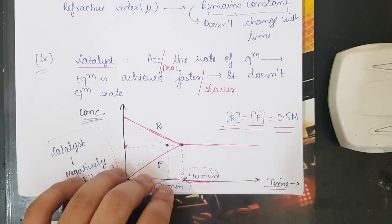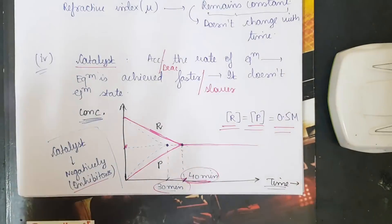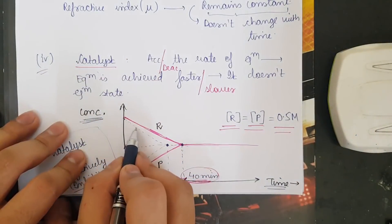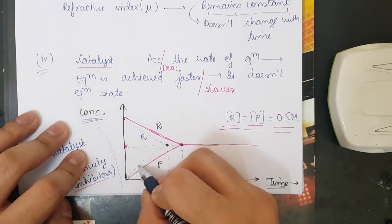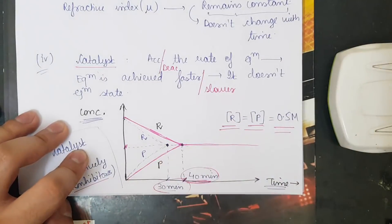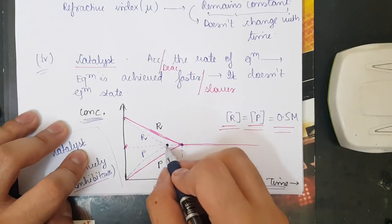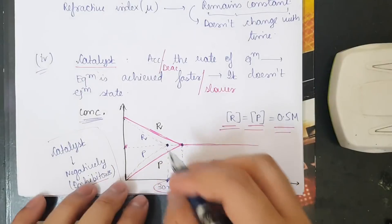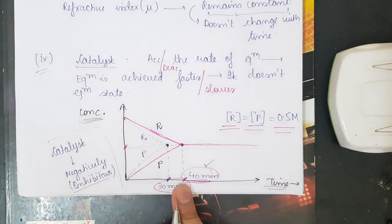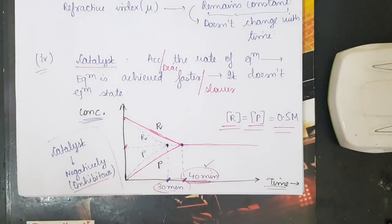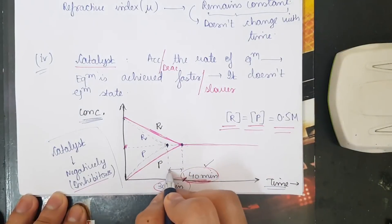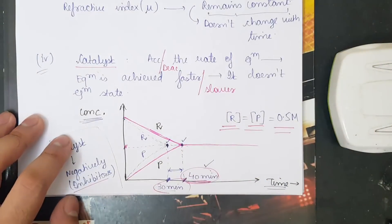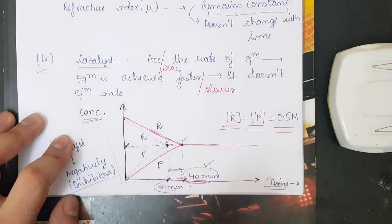When a catalyst is added (shown with the blue pen graph), the reactant and product curves reach equilibrium faster — at t = 30 minutes. So without catalyst the equilibrium is achieved at t = 40 minutes, but with the catalyst it is achieved at t = 30 minutes. The catalyst accelerates the rate of equilibrium by 10 minutes in this example.